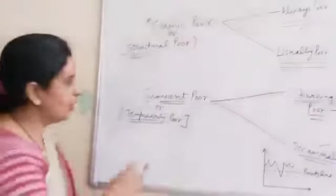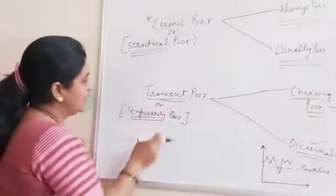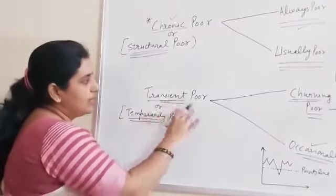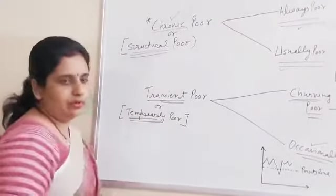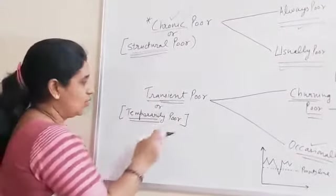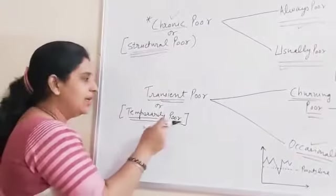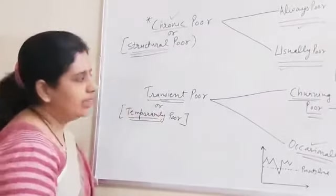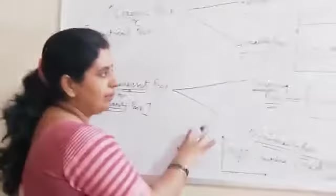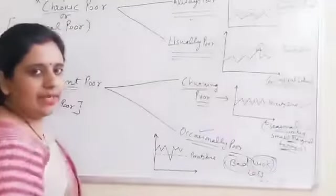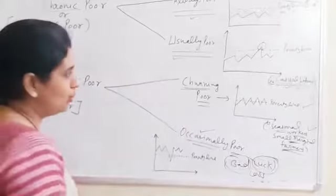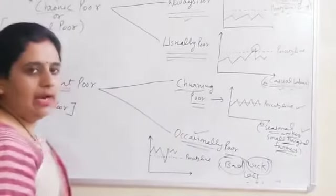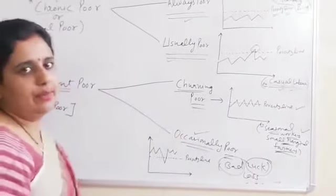Now we will discuss the second major category, which is called transient poor. It is also called temporarily poor. It can be further categorized into two parts: churning poor and occasionally poor.